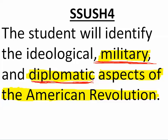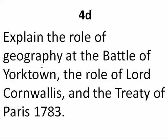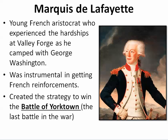That'll be Standard 4-D: explain the role of geography at the Battle of Yorktown, the role of Lord Cornwallis, and the Treaty of 1783. A little background — we talked about Marquis de Lafayette and Benjamin Franklin working together to get the French to help us. It's Lafayette who is going to plan out the Battle of Yorktown that's going to end the American Revolutionary War. He was instrumental in getting French reinforcements — meaning Army and Navy — for us. He's a French aristocrat who is going to work with George Washington, serve as a commander of some of Washington's troops, and suffer at Valley Forge.